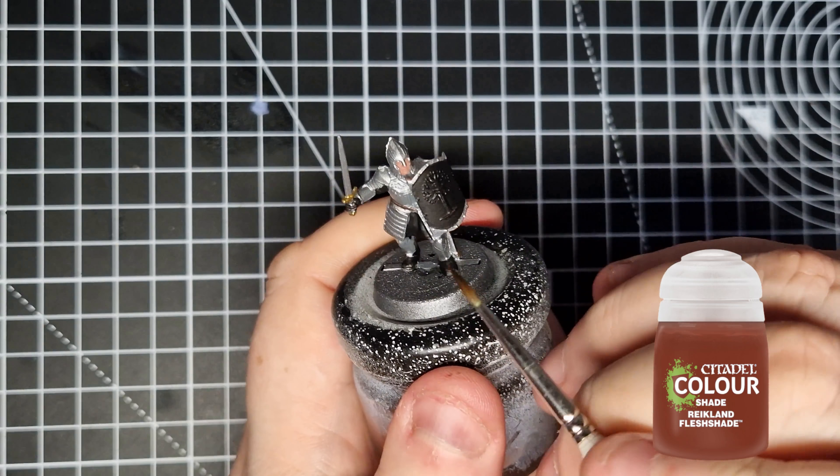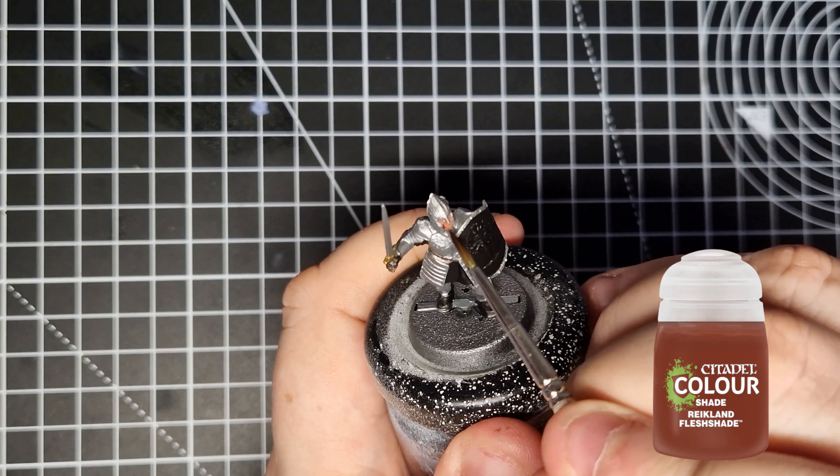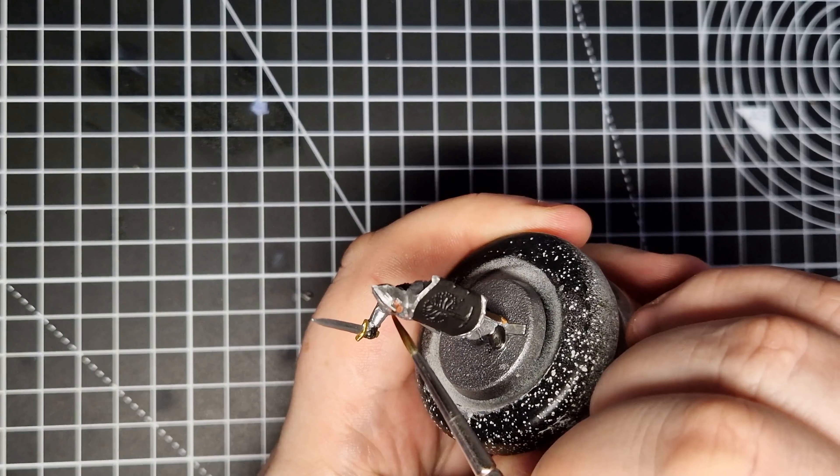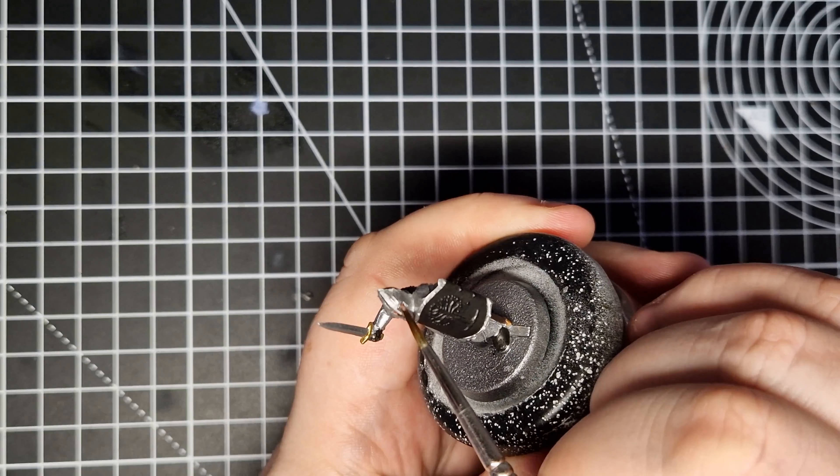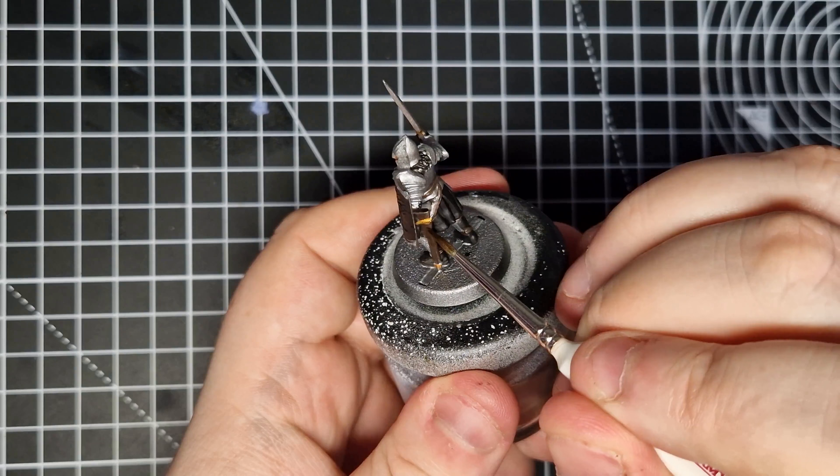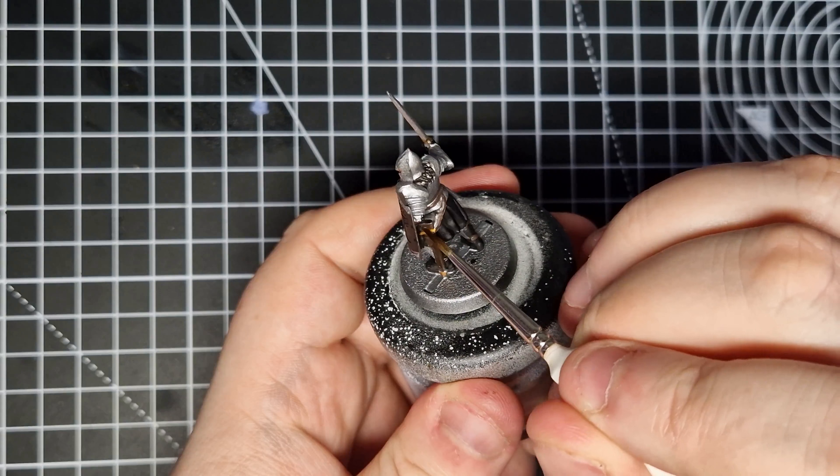Now that we've blocked in all of the base colours, it's time to add some washes. The first one we're going to use is Reikland Fleshshade, which we're going to use for the flesh. So we're going to paint over the face as well as the leather straps going around his waist and his sword scabbard as well. We're going to use the Reikland Fleshshade to give it a warm colour rather than using a Nuln Oil for that as well.